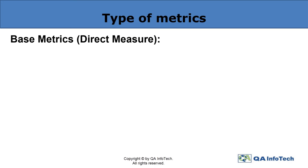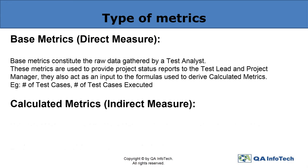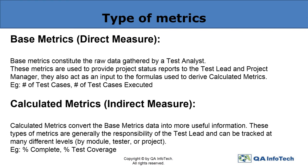The various types of metrics include base metrics, which serve as the raw data collected by a test analyst that provide the project status report to the team, lead, and project manager, and also act as an input for formulas to derive calculated metrics. These may include the number of test cases or the number executed. Calculated metrics convert the base metrics data into more useful information, generally by the test lead, and can be tracked at various levels.